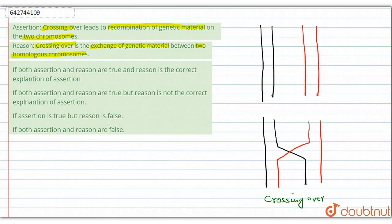We have these two chromosomes, and the question says that crossing over leads to the recombination of genetic material on the two chromosomes. The assertion is correct because crossing over involves recombination of genetic material, that is, DNA.